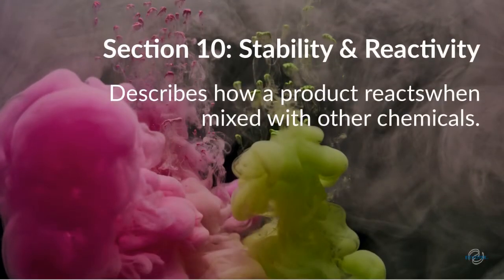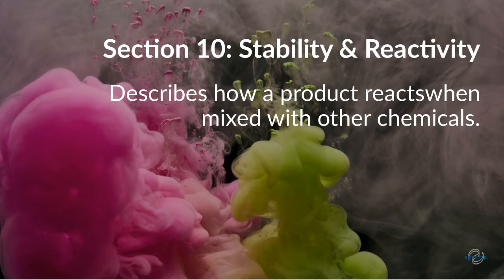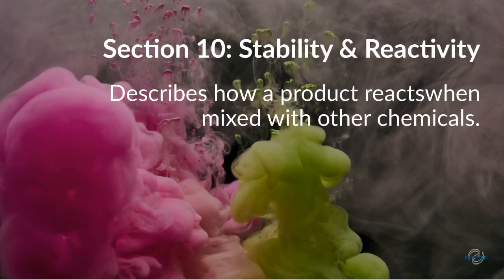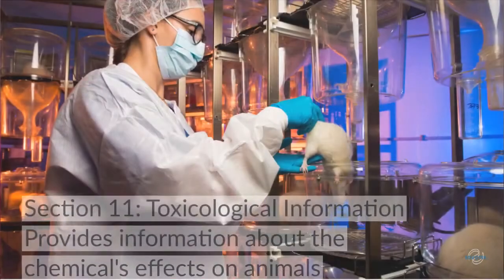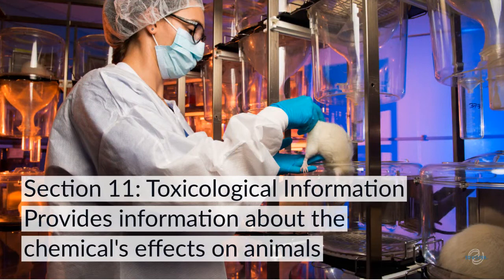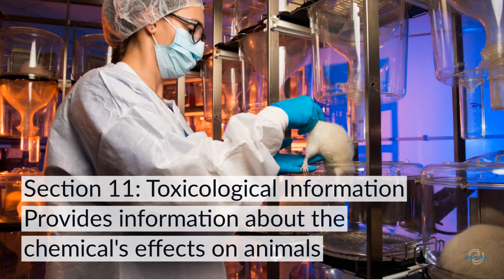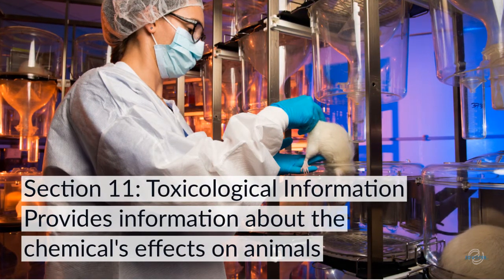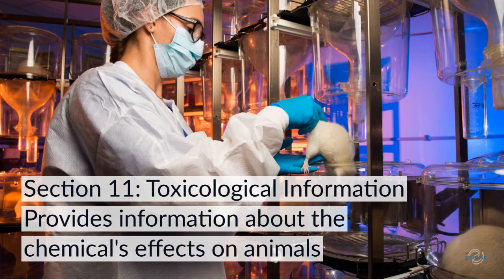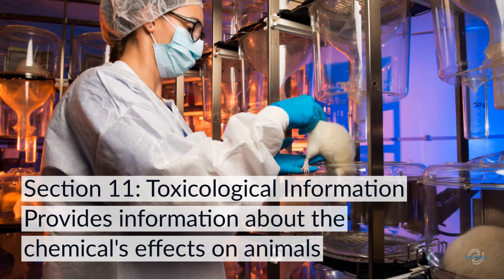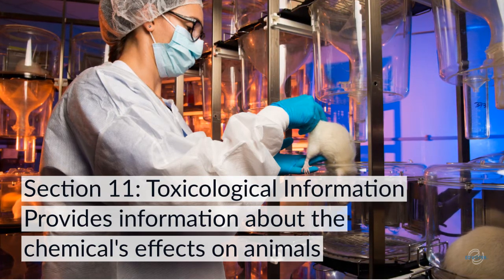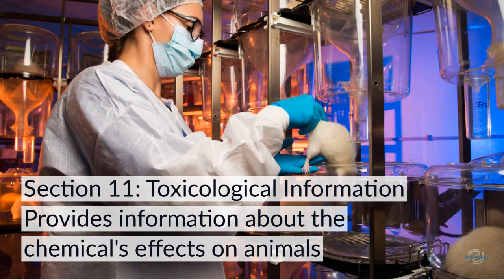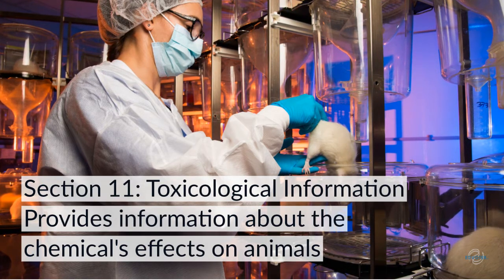If you need more information about a chemical's stability and possibility of hazardous reactions, you'll refer to Section 10. This section describes how chemicals react when stored and when mixed with other chemicals. Section 11 provides information about a chemical's toxicology, or the effects of the chemical on living creatures. This includes the routes of exposure, a description of symptoms both acute and chronic, and numerical measures of toxicity like LD50 and LC50.